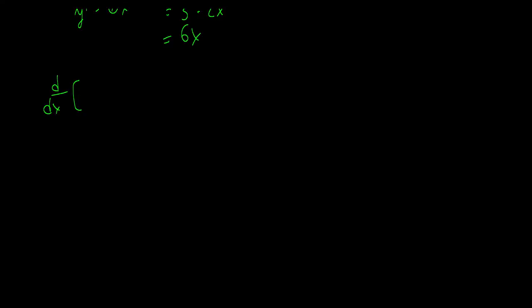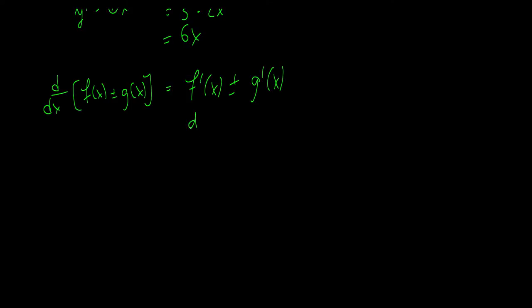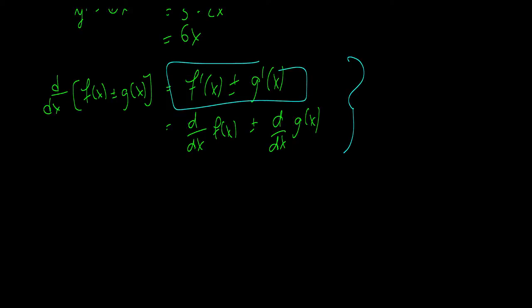Another rule: we take the derivative with respect to x of two functions f(x) plus or minus g(x), and it's the same as the derivative of f(x) plus the derivative of g(x). These two notations are exactly the same — one is just easier to write. I might even shorthand it further to just f prime plus or minus g prime, dropping the function-of-x notation, since it's quicker to remember with shorter mnemonics.